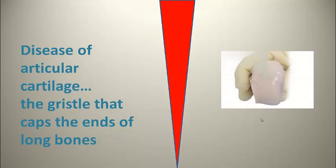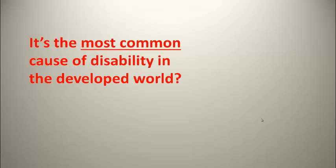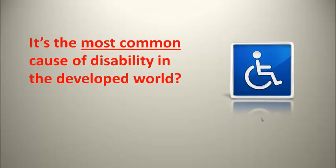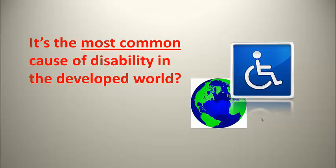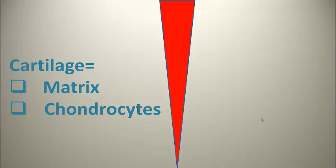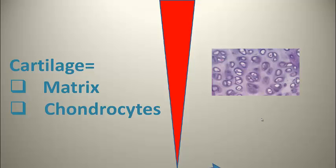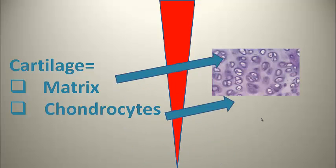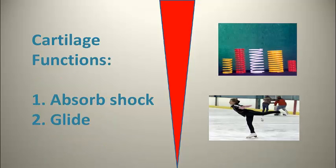It's a disease of articular cartilage — the gristle that caps the ends of long bones. It's the most common cause of disability in the developed world. Cartilage consists of a matrix, a sort of soup, and inside the soup are cells called chondrocytes. Cartilage functions as a shock absorber and it facilitates the gliding of joints.